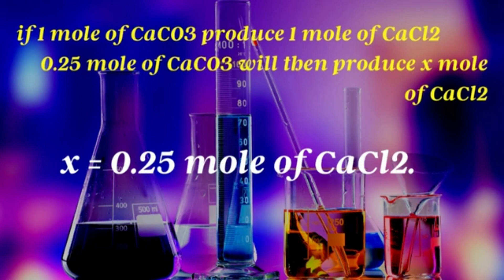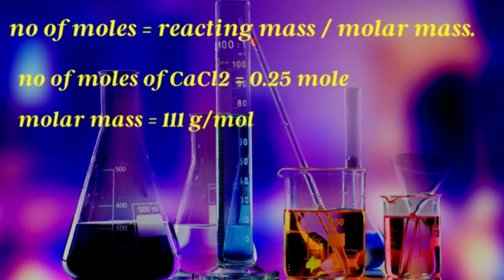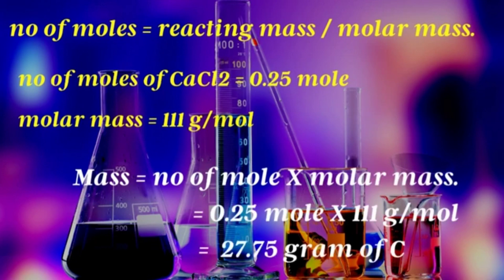We are asked for the mass of calcium chloride, so we now convert 0.25 moles of CaCl₂ into mass. Since moles = mass / molar mass, we rearrange to: mass = moles × molar mass. That gives us 0.25 mol × 111 g/mol — the mole units cancel — giving a final answer of 27.75 grams of calcium chloride.